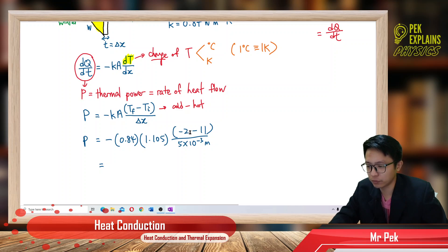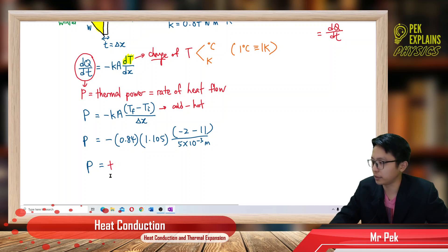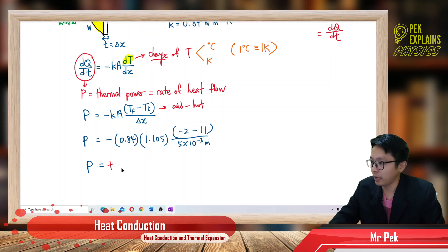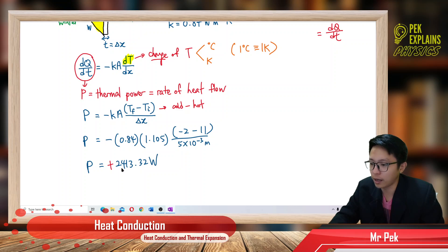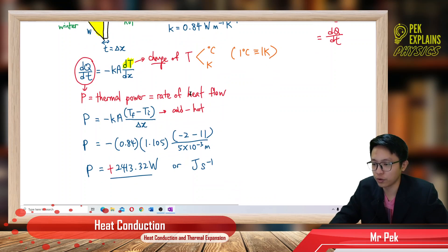Here you get negative 2 minus 11 equals negative 13. Negative times negative becomes positive. So our power will be positive — if you get a negative value, you are wrong. After you calculate, you will get 2413.32 watt. The answer can also be in joules per second, since power is energy over time. The unit of rate of heat flow is watt.